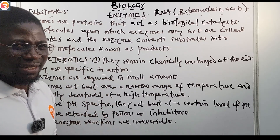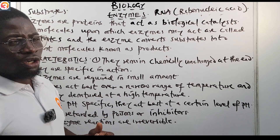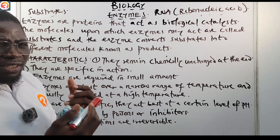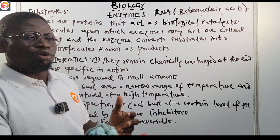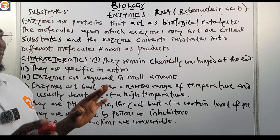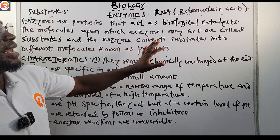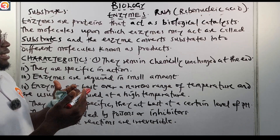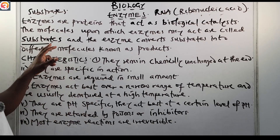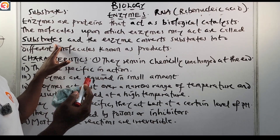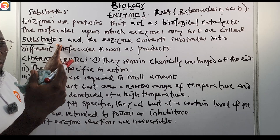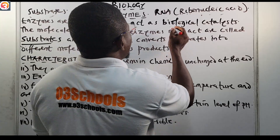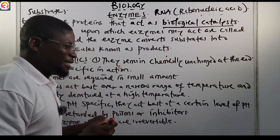Enzymes are substances — proteins, or in some cases ribonucleic acids — that speed up chemical reactions and modify substances known as substrates, making products out of them. The molecules upon which enzymes act are called substrates. Enzymes are biological catalysts; they speed up chemical reactions by lowering the reaction's activation energy.